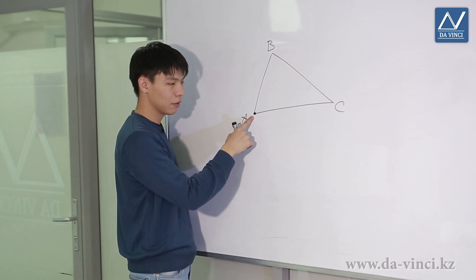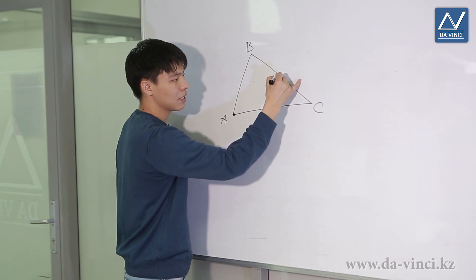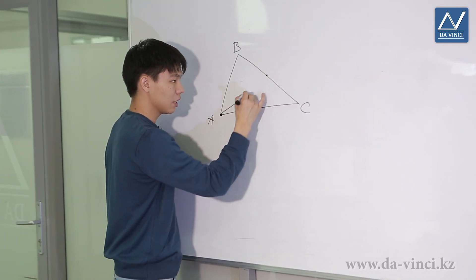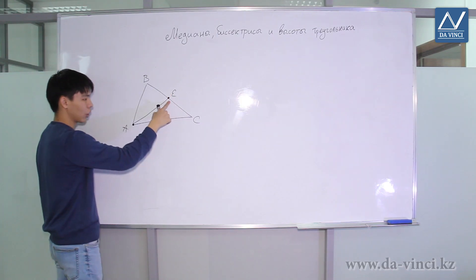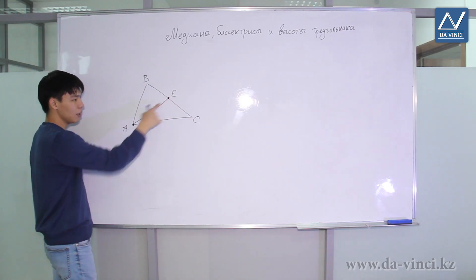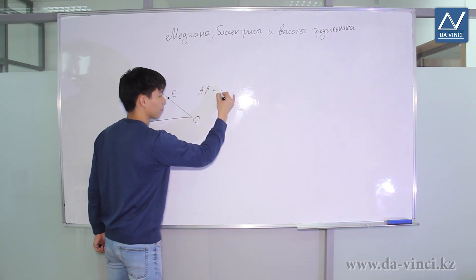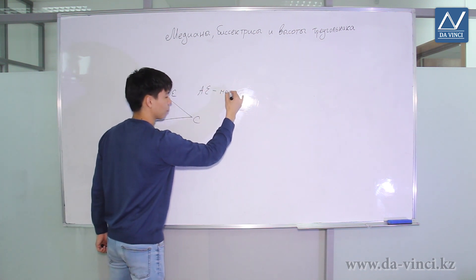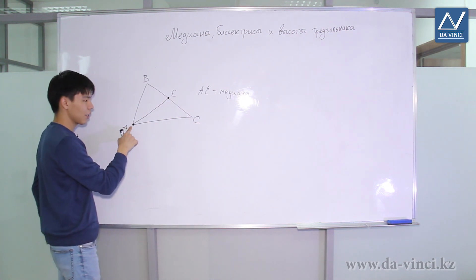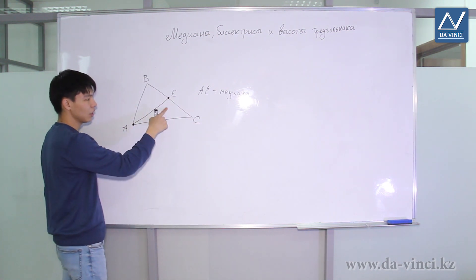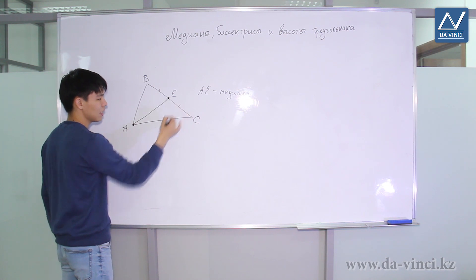For example, if I take vertex A, I mark the middle of side BC and connect this segment. Let's mark this point E. AE will be called the median of this triangle. That is, the median is a segment connecting the vertex with the middle of the opposite side. This means that BE equals EC.